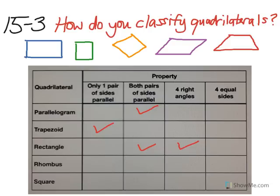A rhombus is a parallelogram with four equal sides. In this case, we're going to check the second column for both pairs of sides parallel and the fourth column for four equal sides for a rhombus. Finally, a square is a rectangle with four equal sides. We're going to check the second column for both pairs of sides parallel. The third column has four right angles. And the fourth column, it also has four equal sides for a square.